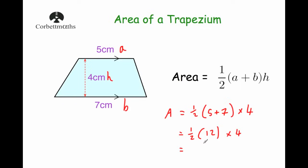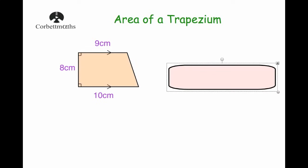We could halve the twelve and times by four, or do twelve times four and then halve it — both give the same answer. In this case I'm going to halve the twelve: half of twelve is six, times by four equals 24. So the area of this trapezium is 24 centimetres squared.